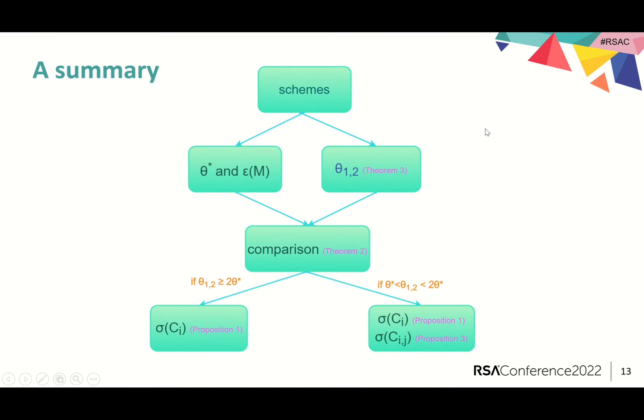Let's make a conclusion. For an actual scheme, the range of angles among different queries can be calculated according to Theorem 3. We can get theta star and epsilon_m based on its parameters. Then, we make a comparison between theta star and theta_{1,2} to determine the intersection of different types. Other conditions in Theorem 2 can also be used.